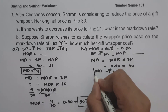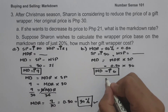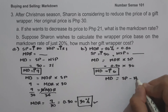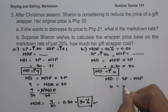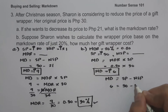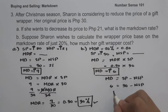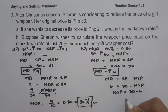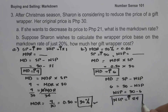Now let us use the markdown to determine the new selling price using the formula: markdown equals selling price minus new selling price. So 6 equals 30 minus new selling price. Rearranging, new selling price equals 30 minus 6, which is 24 pesos. This is the new selling price and our answer for letter B.